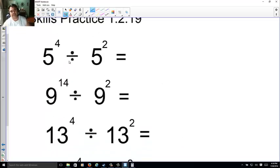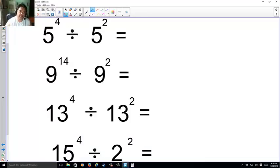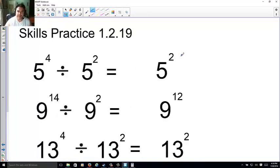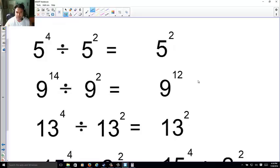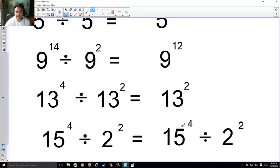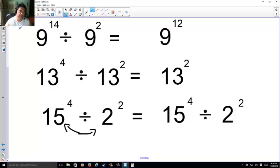Skills practice time. Go ahead and give these a try. Let's see how you did. I got 5 to the 2nd, 9 to the 12th, 13 to the 2nd. And, hmm, why nothing here? Because the bases weren't the same. So, I can't do nothing. At least no shortcuts.